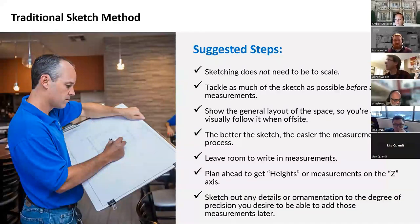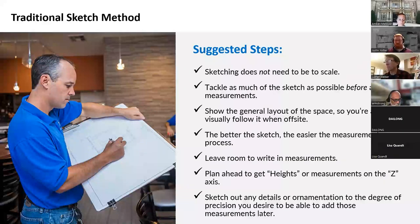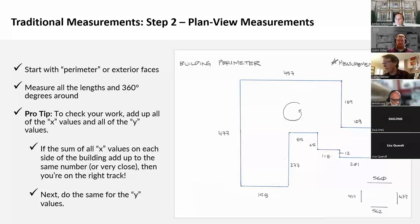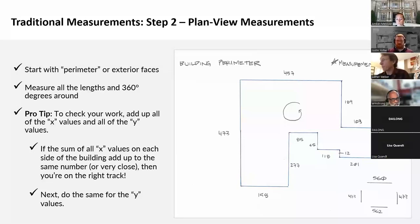The better the sketch, the easier the measurements. Plan ahead to get your heights or z-axis measurements, and sketch out any details or ornamentation you need based on your degree of precision. The best way to start measuring your plan view is to start by taking measurements of all the exterior faces. When taking those dimensions, check that all your X and Y dimensions match up — this can be tricky with curved walls or non-90-degree walls. Generally, if they're within one to two inches side to side, that's usually pretty close for most properties.